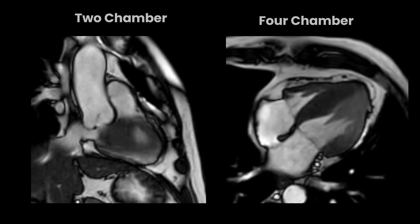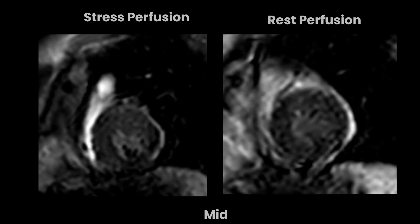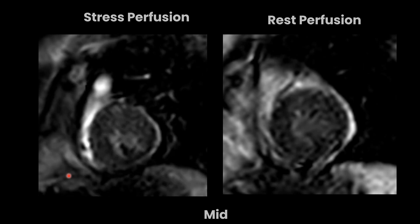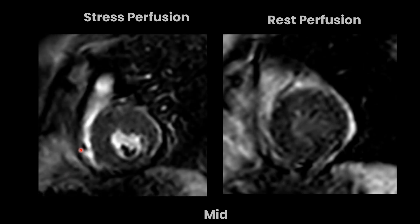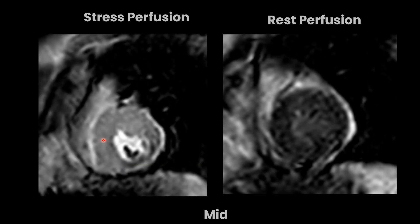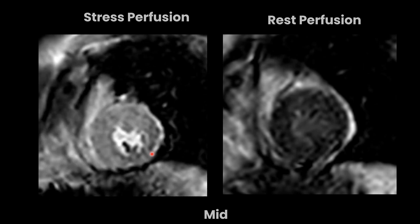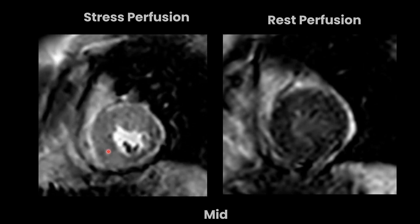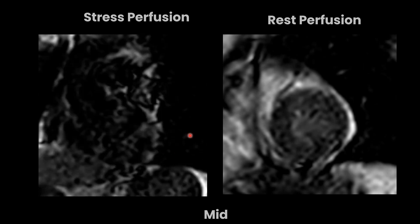Moving to the next set of images — the stress perfusion images. After giving adenosine, we see how the contrast is behaving. The contrast enters the right ventricle, then the left ventricle lumen. There are areas of blackishness — these are perfusion defects seen in stress perfusion images, in the mid segment of the myocardium.